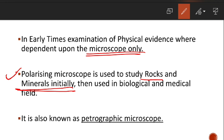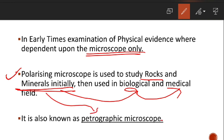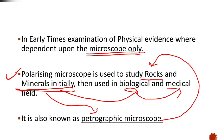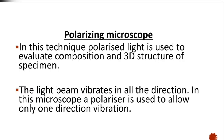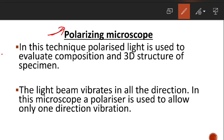Now we talk about the polarizing microscope. It was originally used for rocks and minerals, and later for biological and medical purposes. Because it is used to study rocks and minerals, it is also called the petrographic microscope. So remember: the polarizing microscope is also known as the petrographic microscope.